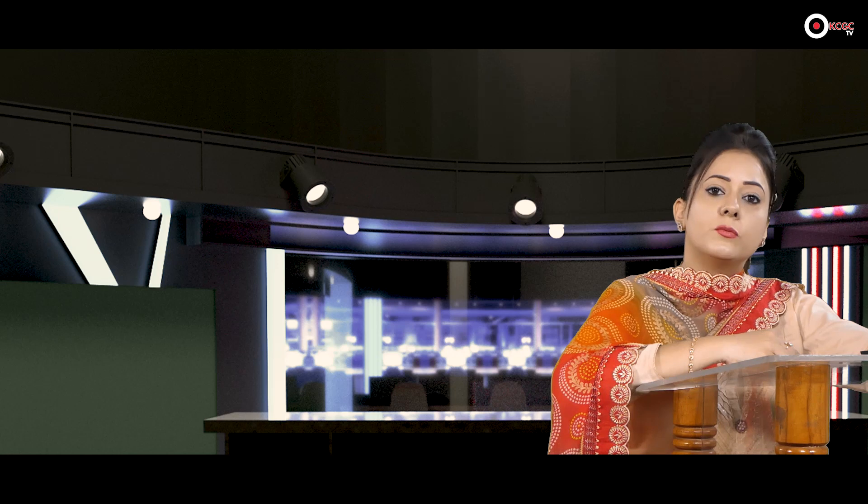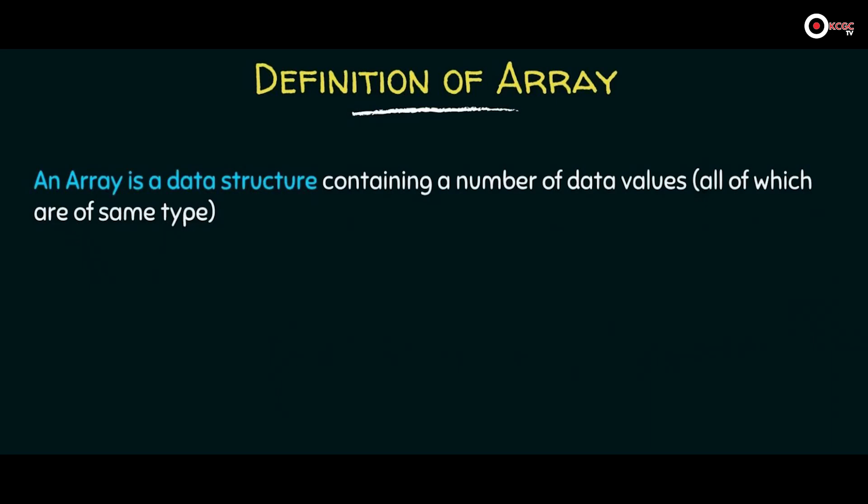Now we are going to explain all six data structures — arrays, stacks, queues, linked lists, trees, and graphs — one by one, and we will see their real-life examples. Let us start with the array. An array is a data structure containing a number of data values, all of which are of the same type.